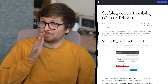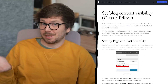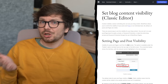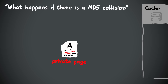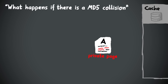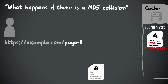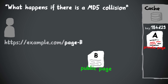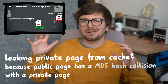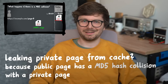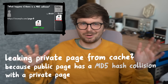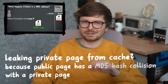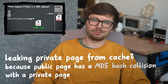WordPress allows you to have private and public pages. So what if page A was a private page stored in the cache, and we request page B which is public? Could we leak the private page if the cache key is the same? This idea sounded like a much cooler attack to me than checking for SQL injection. So this is the rabbit hole I went down.